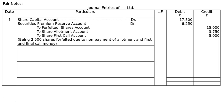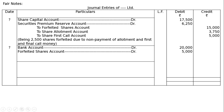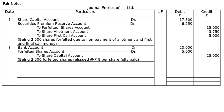Second entry — Reissue of shares: Bank Account debited: 2500 shares reissued at Rs. 8 per share = Rs. 20000. Forfeited Shares Account debited: Rs. 2 per share discount × 2500 = Rs. 5000 (also called discount on reissue). To Share Capital Account: 2500 × Rs. 10 = Rs. 25000. Narration: Being 2500 forfeited shares reissued at Rs. 8 per share as fully paid.